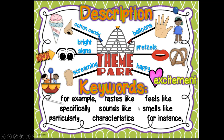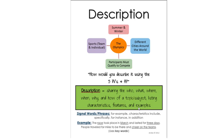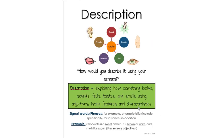With description, you're using those five senses to help describe something. In description, we're using those five W's and the H. We're looking for features, examples, and characteristics — things that sound like, feel like, taste like. Use features and characteristics, those adjectives, those descriptive words, those sensory adjectives.